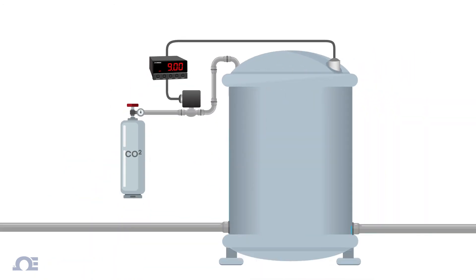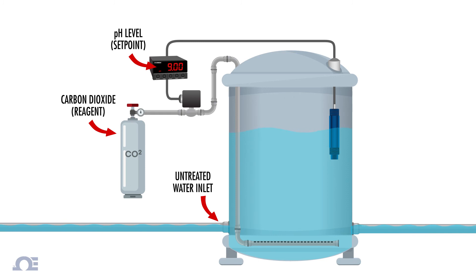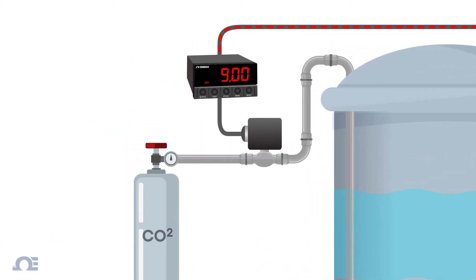In this example of a water treatment system, a pH level of 9 is maintained using carbon dioxide as a reagent. Untreated water flowing into the tank is monitored by the pH electrode. The electrode sends its signal to the controller, where the set point is compared to the incoming electrode signal.